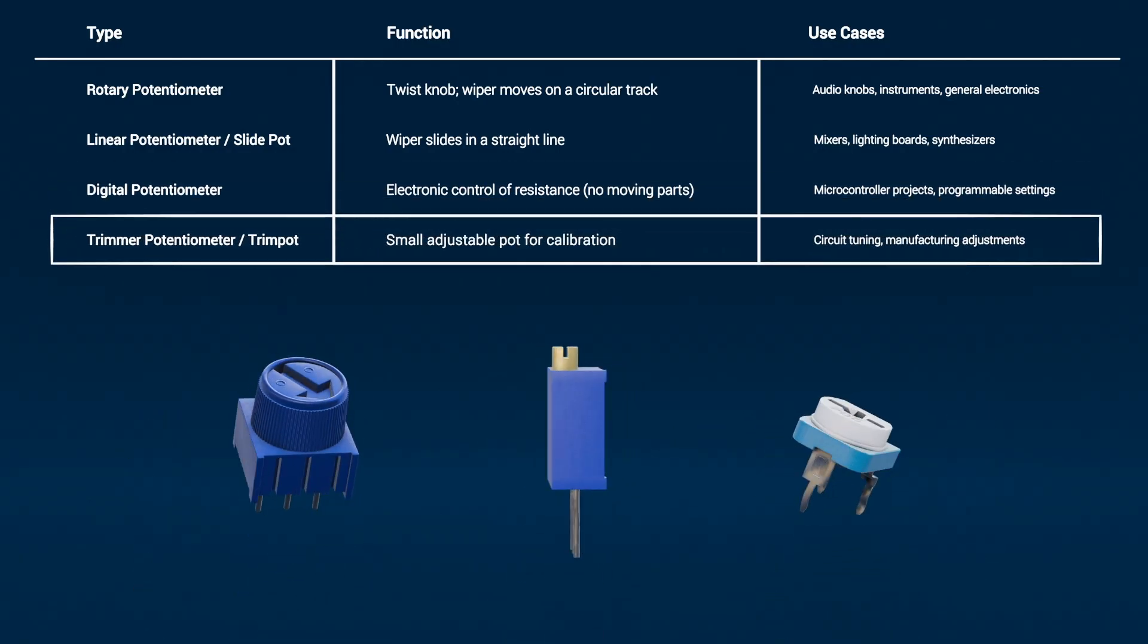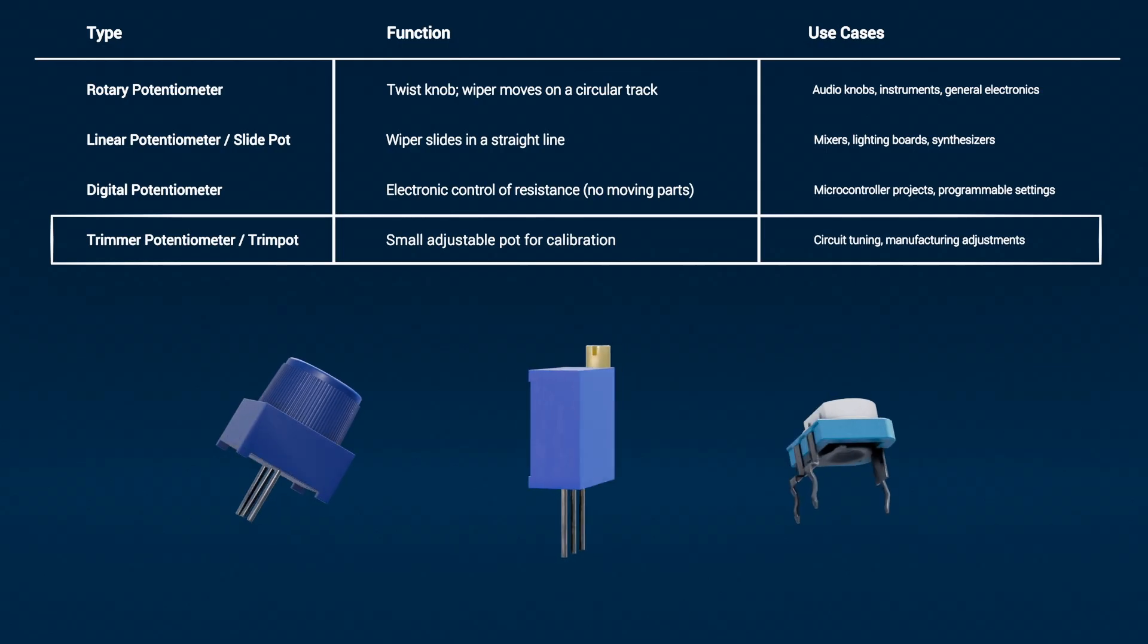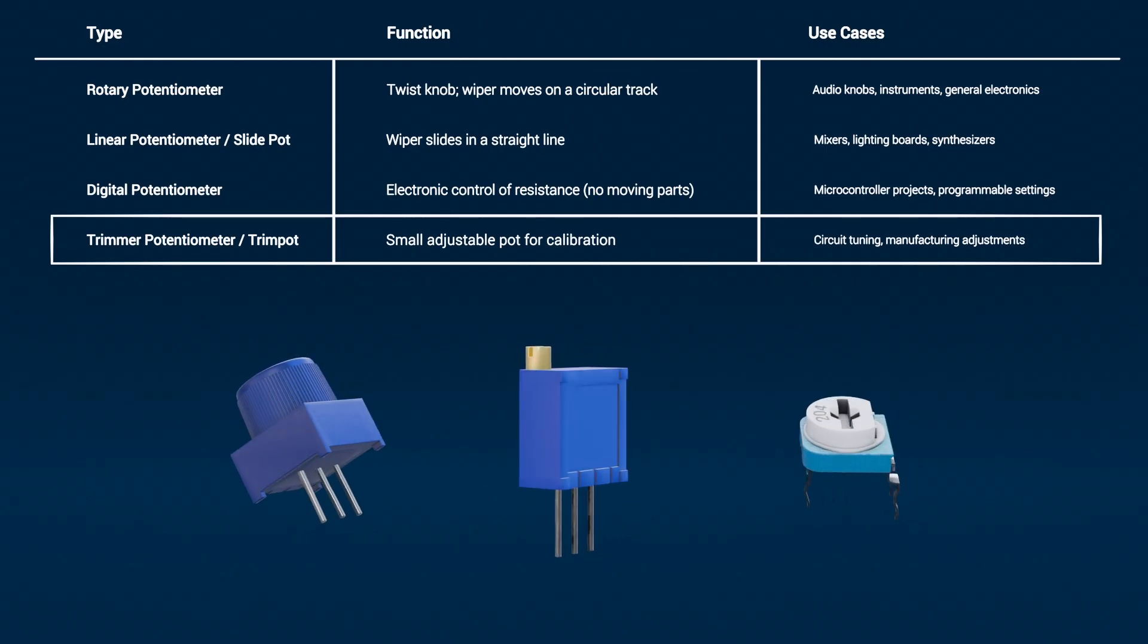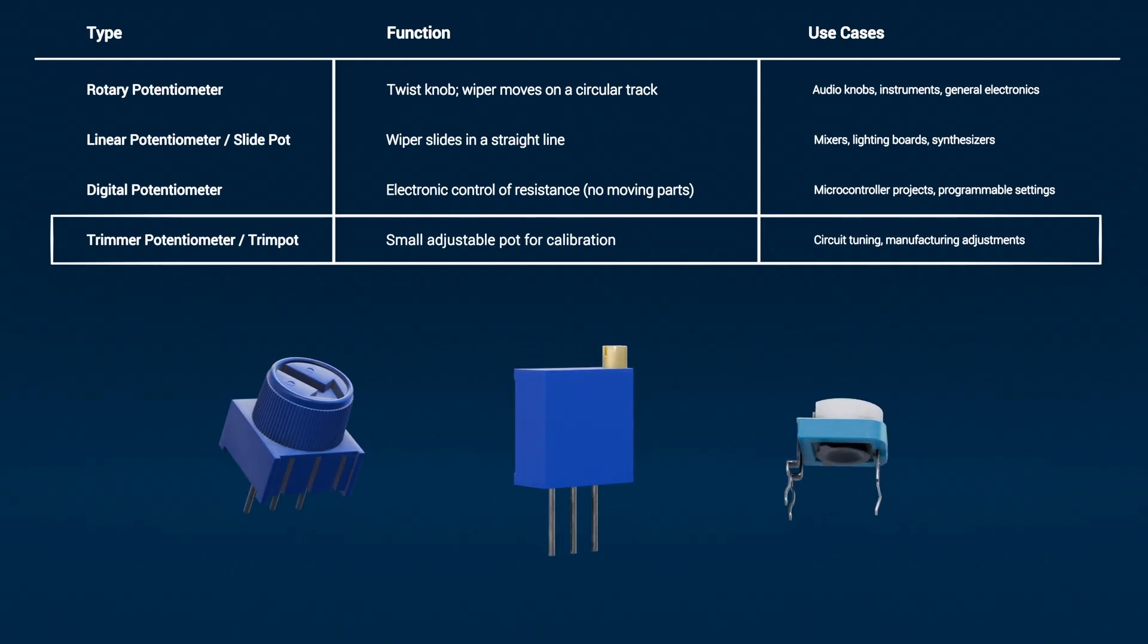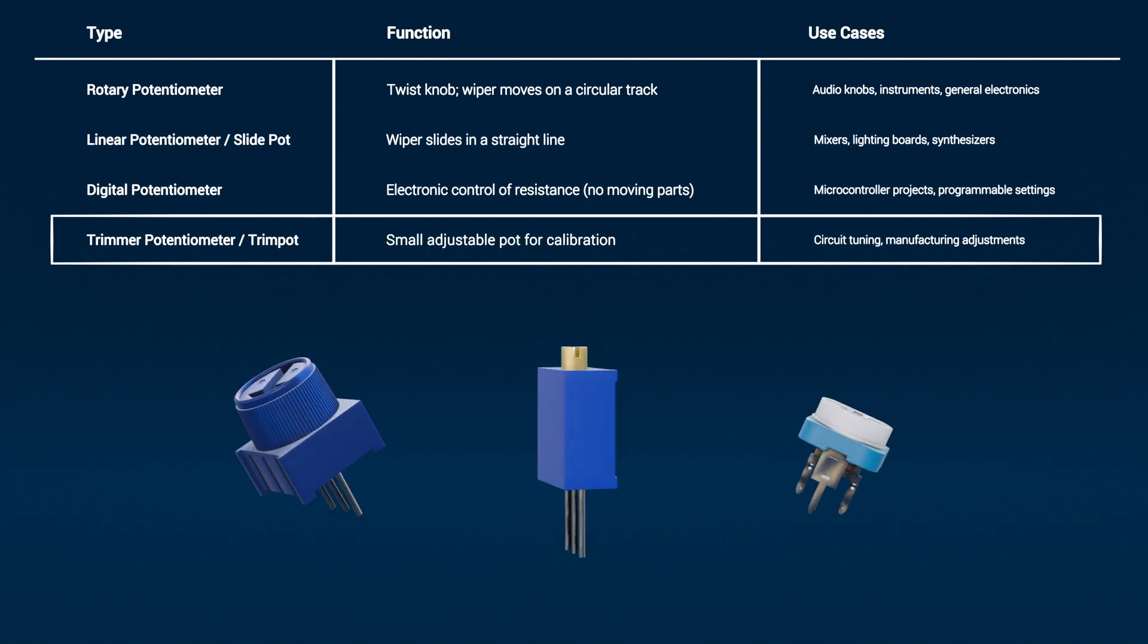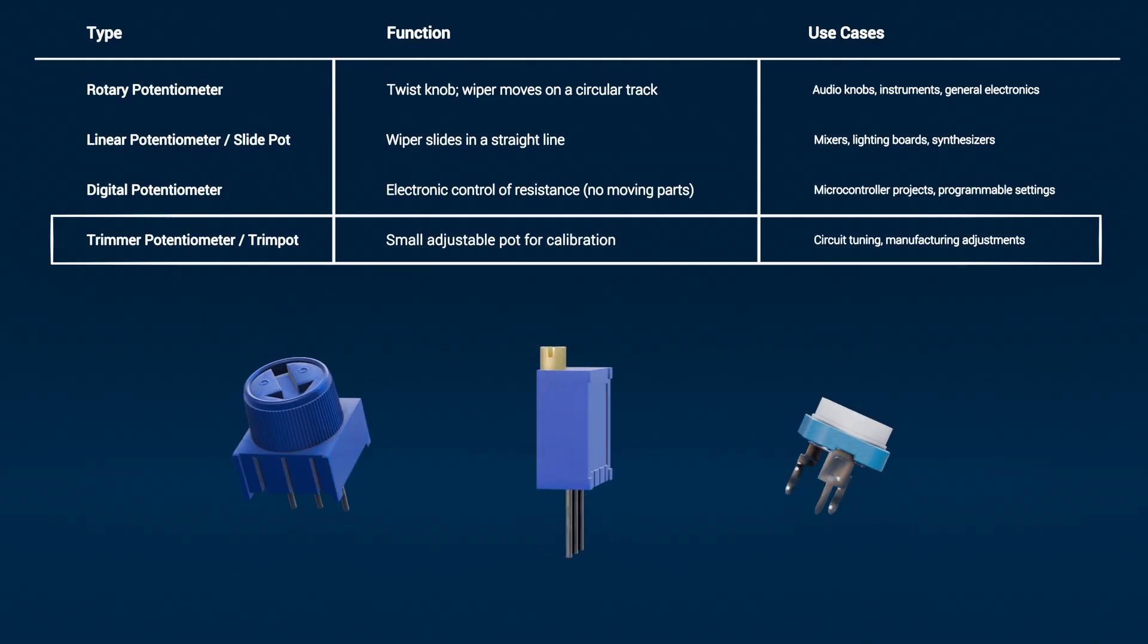Trimmer potentiometer, also known as trim pot. A small, adjustable potentiometer used for calibration inside circuits. They're often single-turn or multi-turn, and are usually set once during manufacture or maintenance.